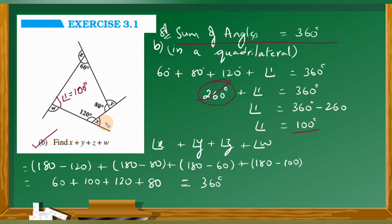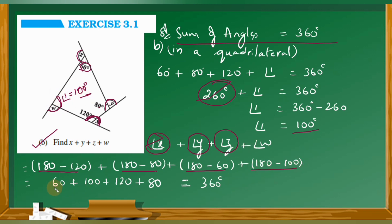Now we find x, y, z, w. Angle x forms a linear pair with 120: x equals 180 minus 120 equals 60 degrees. Angle y forms a linear pair with 80: y equals 180 minus 80 equals 100 degrees. Angle z forms a linear pair with 60: z equals 180 minus 60 equals 120 degrees. Angle w forms a linear pair with 100: w equals 180 minus 100 equals 80 degrees. So x plus y plus z plus w equals 60 plus 100 plus 120 plus 80 equals 360 degrees.